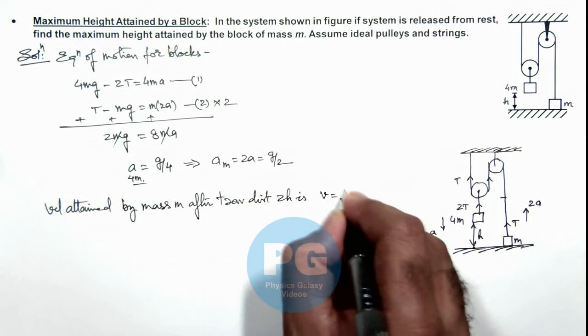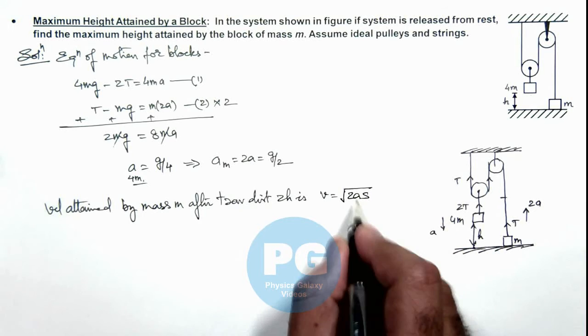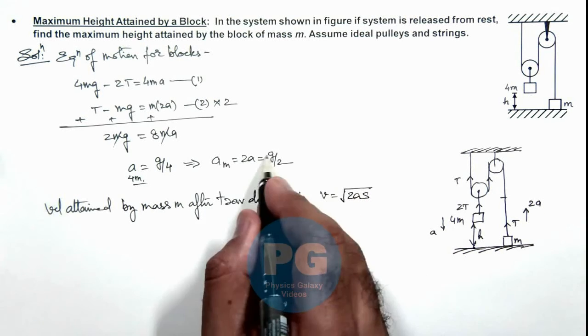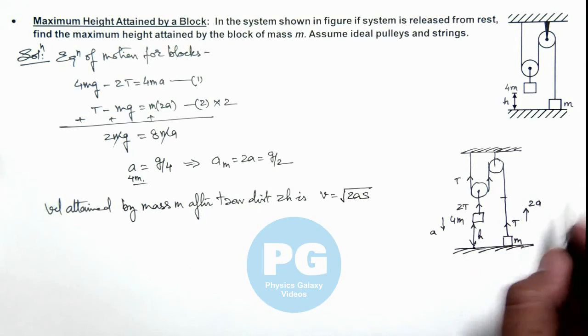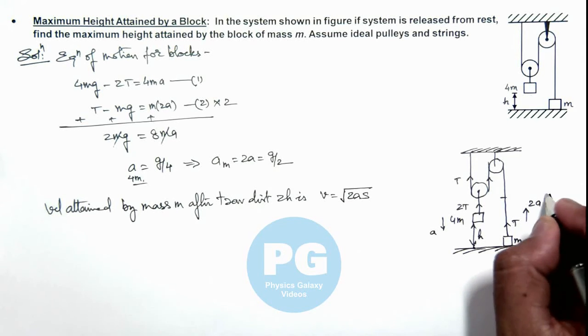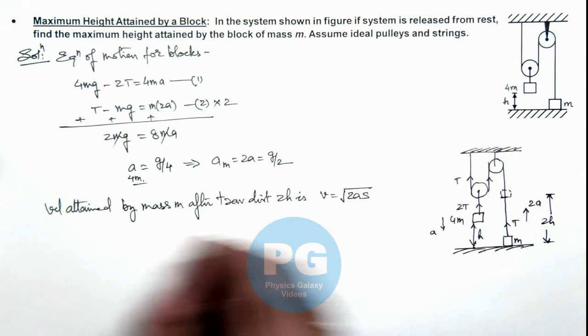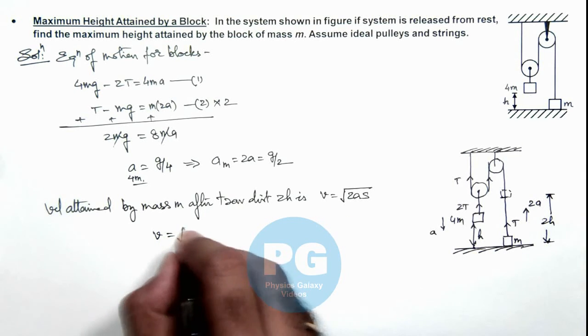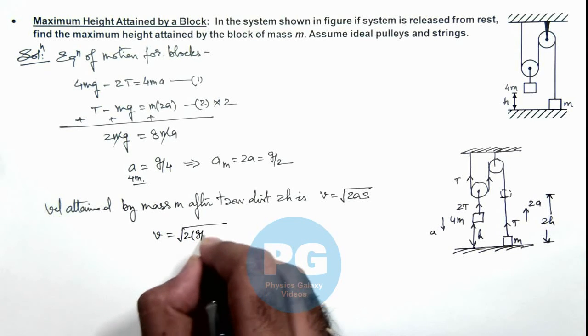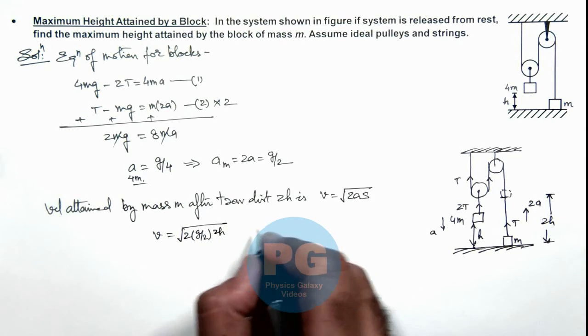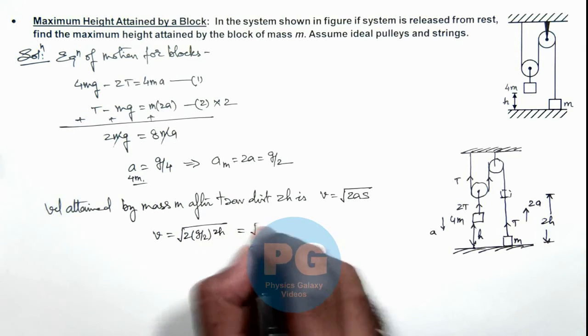The speed can be written as root of 2 times a times s, where the acceleration is g by 2 and s is 2h. When 4m falls by h, mass m moves up by 2h. So the speed attained will be root of 2 times g by 2 times 2h, which equals root 2gh.